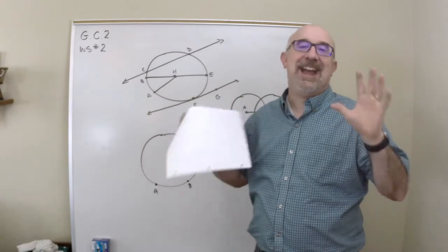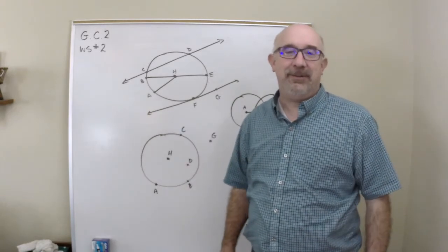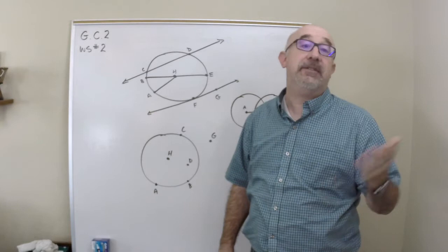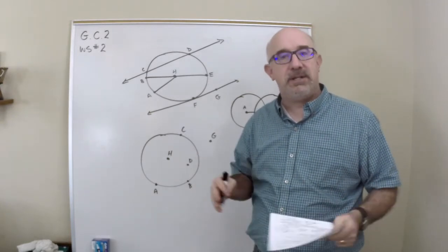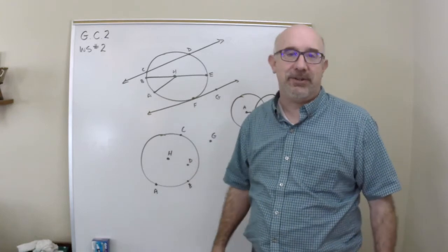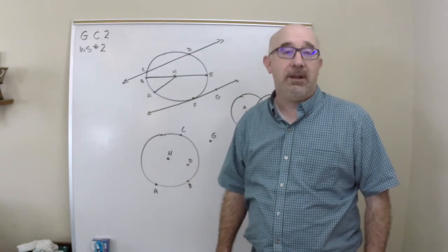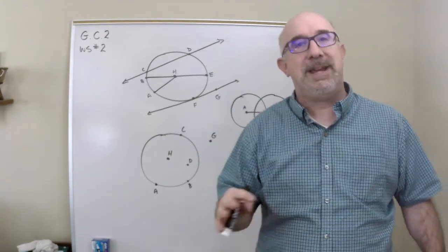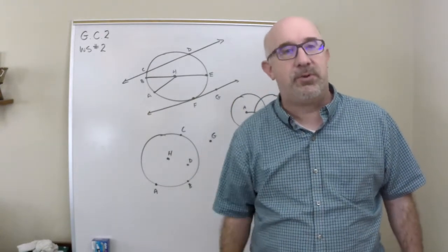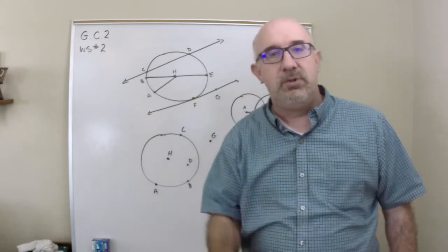GC2 is a gigantic standard. It will cover, I think, 10 different worksheets of material. Basically, it just talks about the properties and relationships found in a circle, and there are a lot of them. This particular worksheet is just kind of getting used to the basics, things that most of you'd walk through the door with, and just a few new things.